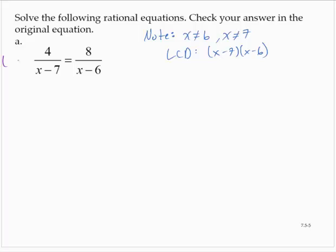So I will multiply both sides of the equation by that quantity. On the left-hand side, the x minus 7s reduce out. On the right-hand side, the x minus 6s reduce out.